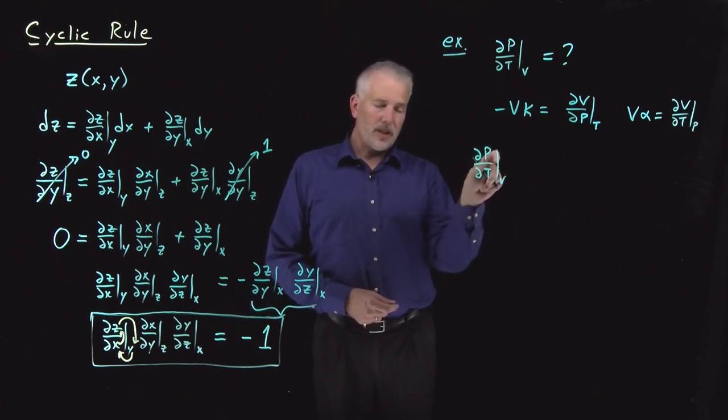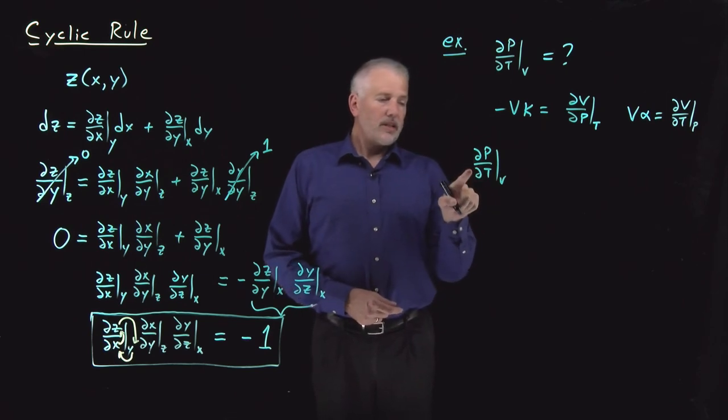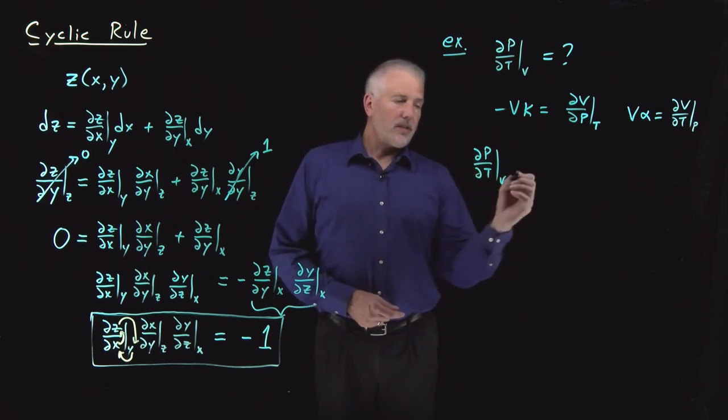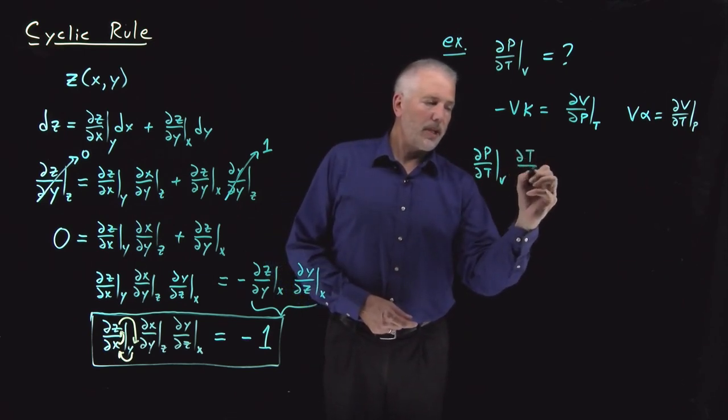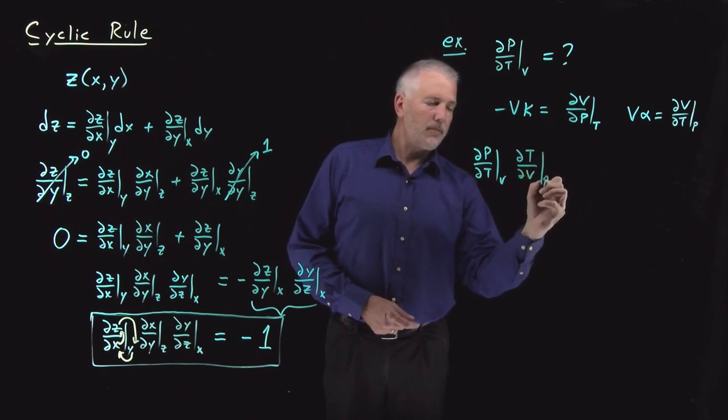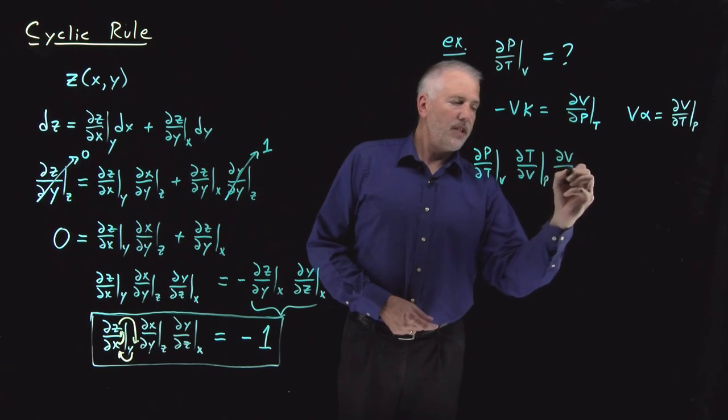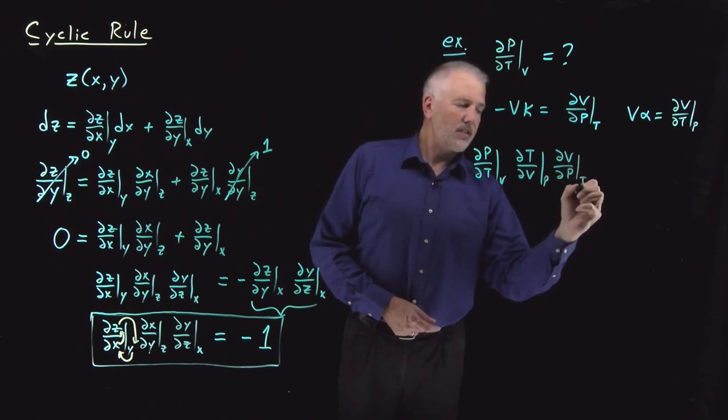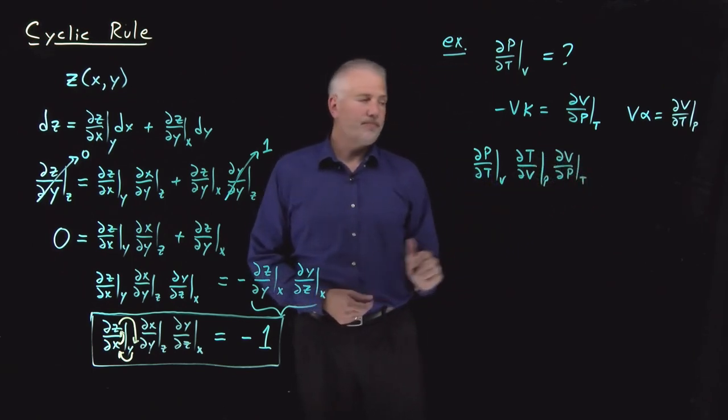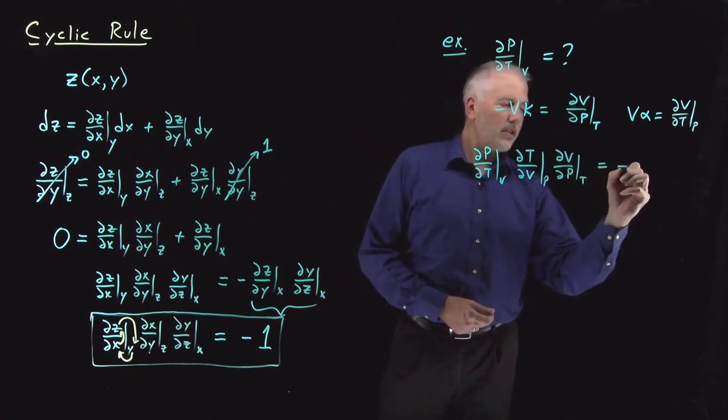So if I just take these three variables and I cycle them around, cyclic rule tells me ∂p/∂T at constant V, multiplied by ∂T/∂V at constant p, cycling the variables, multiplied by ∂V/∂p at constant T, cycling them around one more time, that triple product is going to be negative one.